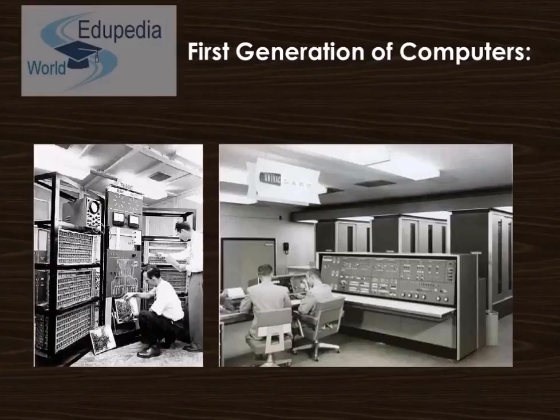As you can see from the pictorial representation, the huge systems were there with thousands of vacuum tubes, requiring constant maintenance, and the processing was also very slow.